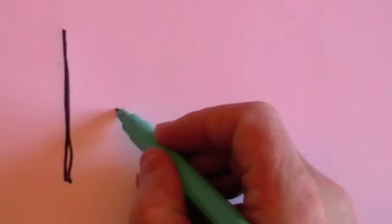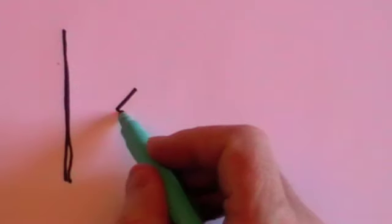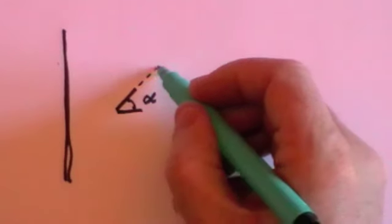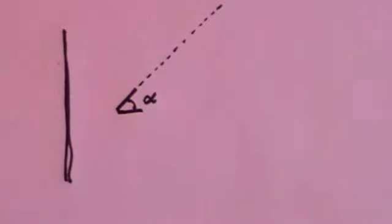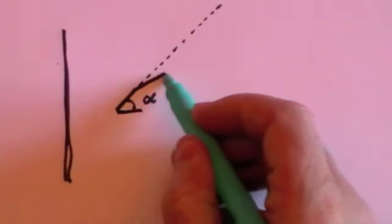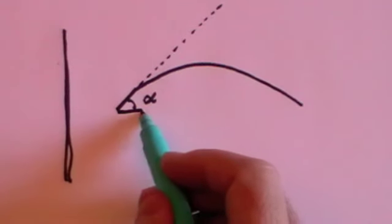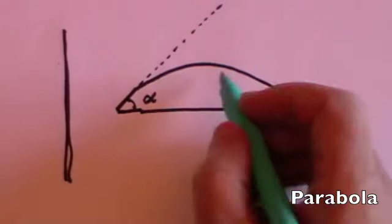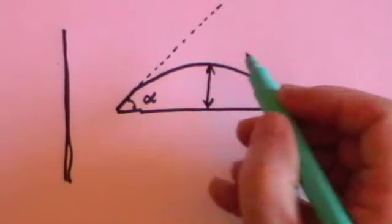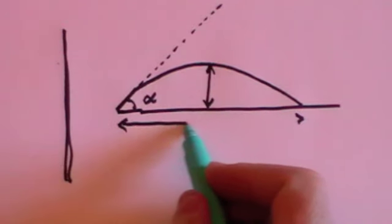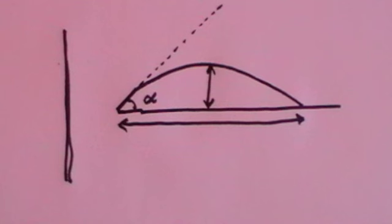Or we could throw the ball at an angle — let's say we throw it at an angle alpha. If there were no gravity, of course, it would just, according to Newton's first law, continue in a straight line. But because of gravity, what it actually does is make a curve before it re-hits the ground again, and that curve is called a parabola. The maximum height is in the middle, and the total distance that the object travels before it hits the ground is called the range.